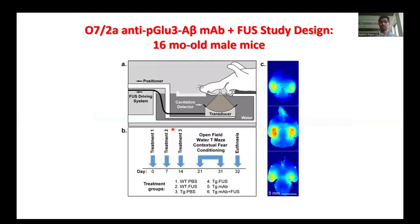In our primary study, we used 16-month-old APPPS1 male mice. These mice were treated either alone or in combination with the 7-2AK monoclonal antibody targeting pyroglutamate 3A-beta plus focused ultrasound. They were treated weekly once for three weeks, and later analyzed for behavioral phenotype and euthanized to examine immunohistochemical parameters.